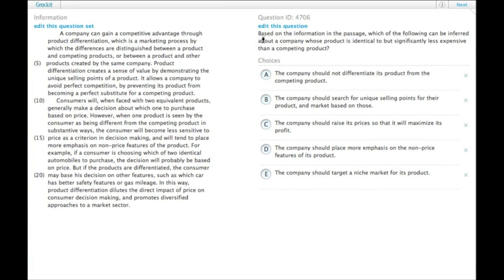I'm assuming that you've read the passage. Based on the information in the passage, which of the following can be inferred about a company whose product is identical to, but significantly less expensive than, a competing product? Okay, so let's see which one of these makes sense.